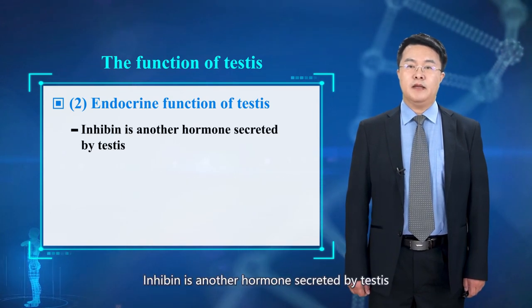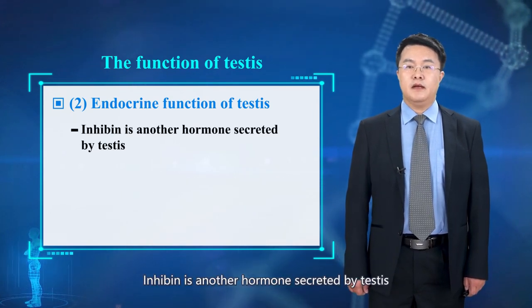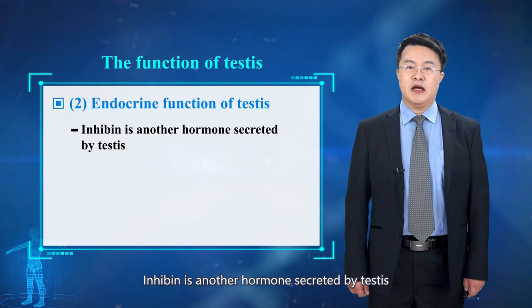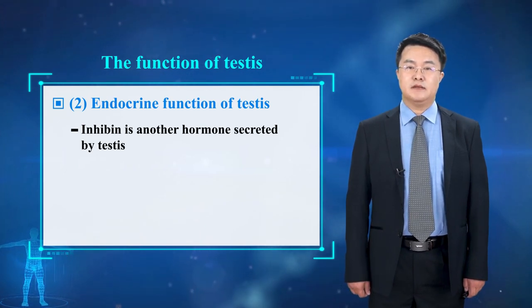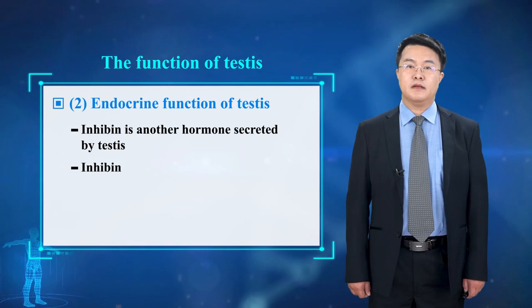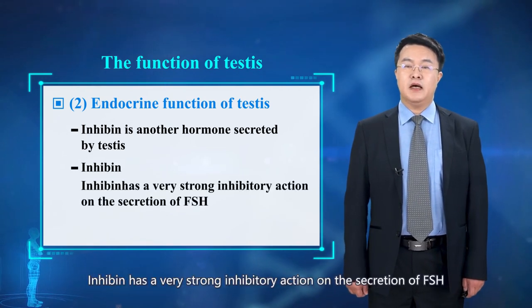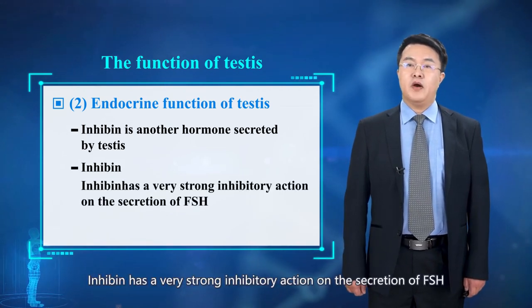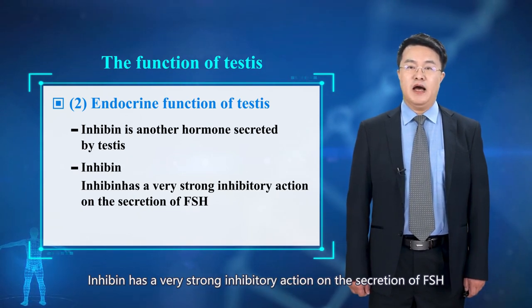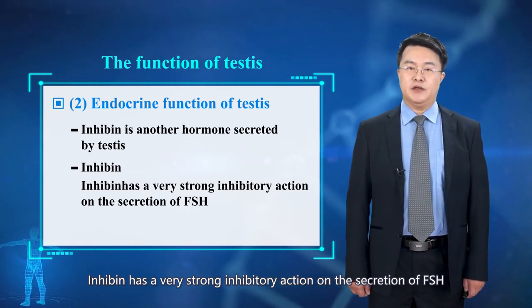Inhibin is another hormone secreted by the testis. Inhibin has a very strong inhibitory effect on the secretion of FSH.